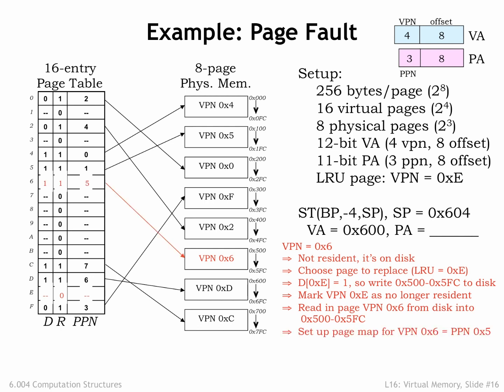Now the handler updates the page table entry for VPN 6 to indicate that it's resident in physical page 5. The page fault handler has completed its work, so program execution resumes and the store instruction is re-executed. This time the MMU is able to translate virtual address hex 600 to physical address hex 500. And since the store instruction modifies the contents of VPN 6, its D-bit is set to 1.